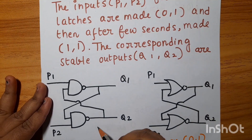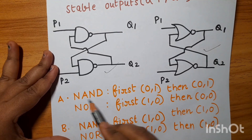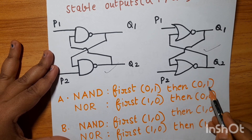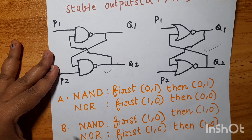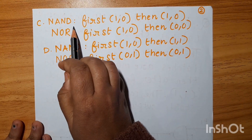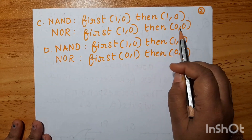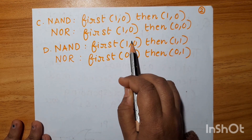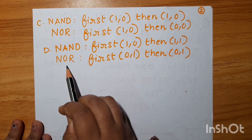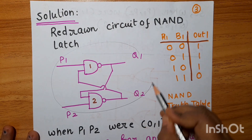Here is the NAND latch and here is the NOR latch. The options are: A) NAND first 0,1 then 0,1; NOR first 1,0 then 0,0. B) NAND first 1,0 then 1,0; NOR first 1,0 then 1,0. C) NAND first 1,0 then 1,0; NOR first 1,0 then 0,0. D) NAND first 1,0 then 1,1; NOR first 0,1 then 0,1.